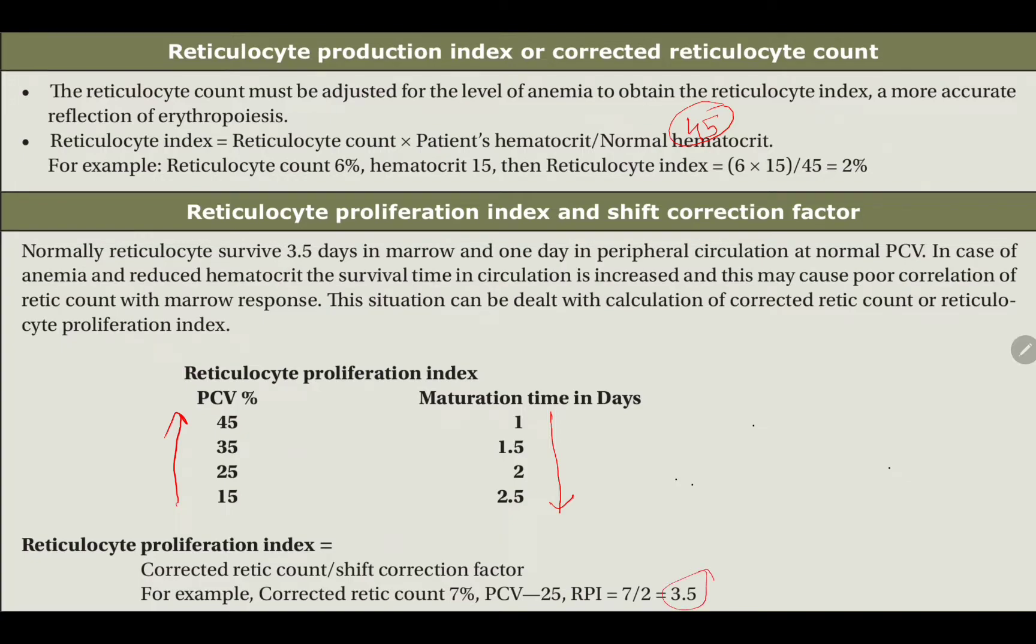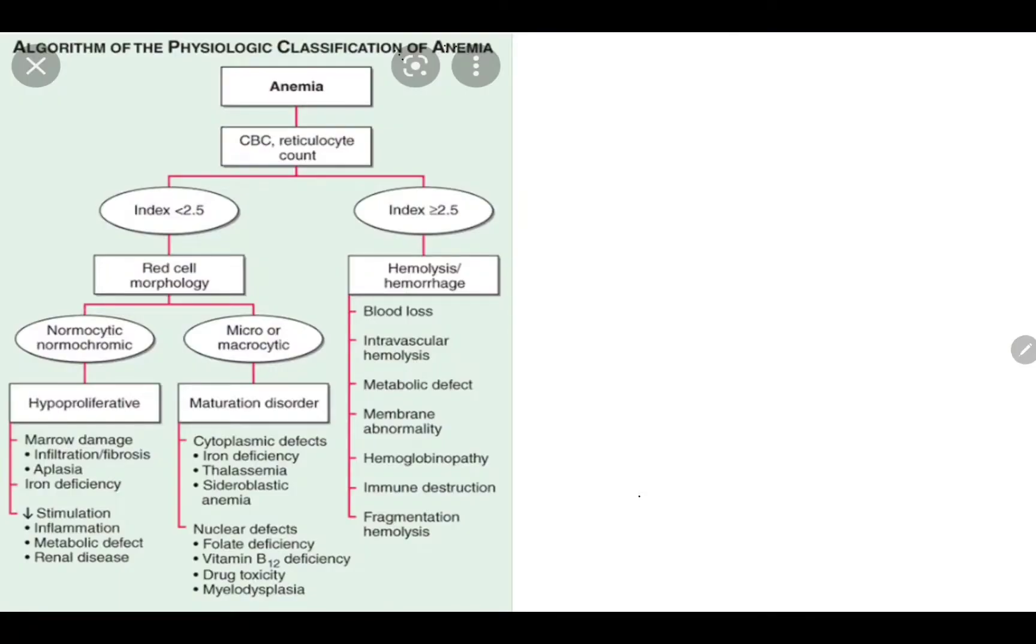The formula is also discussed in the previous slide. The application of this is the flowchart from the textbook. First, the anemia. We have to look for the CBC and the retic count. In retic count parameters, we will find out the corrected retic and the reticulocyte production index. As I have mentioned in my first slide, the normal RI is 2 to 3.